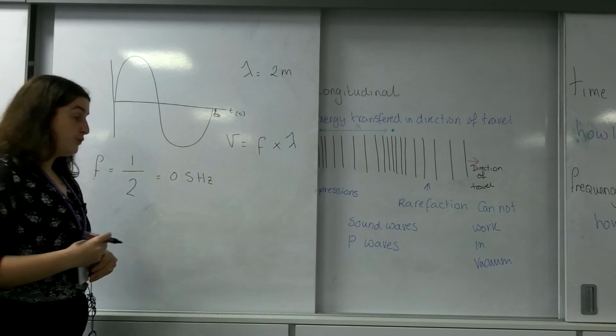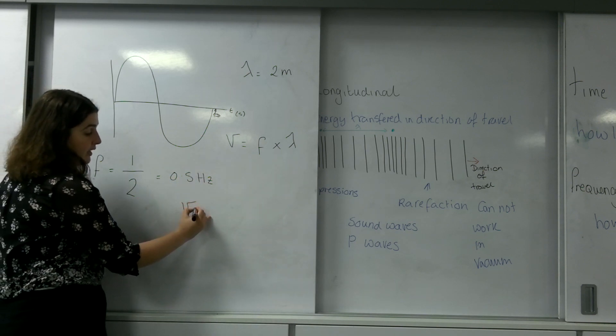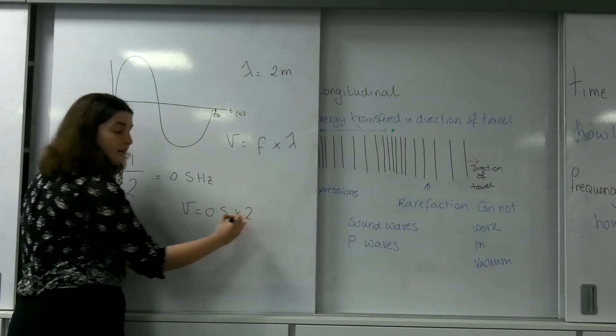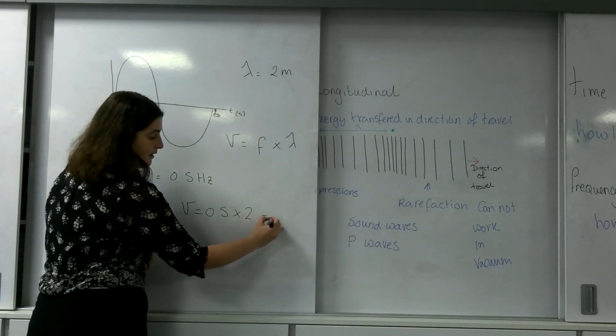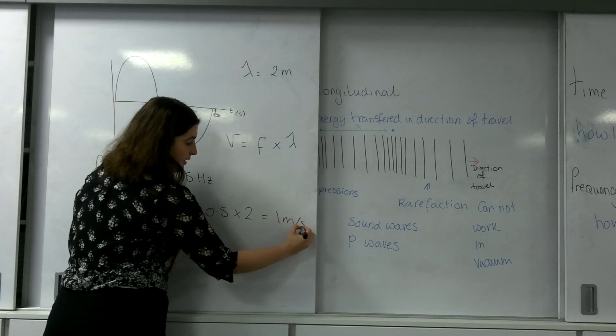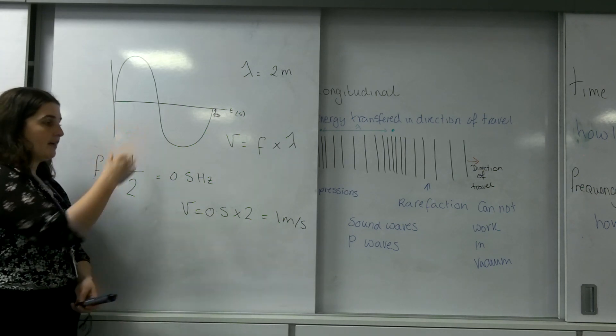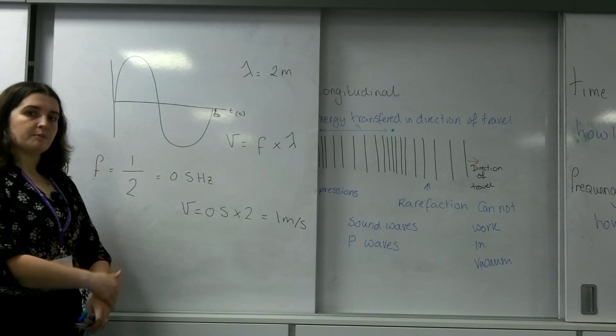I'm going to put these into this formula now. V equals 0.5 times by 2, and I end up with 1 meters per second. This wave is going 1 meters per second.